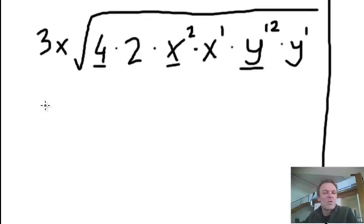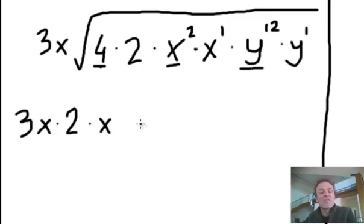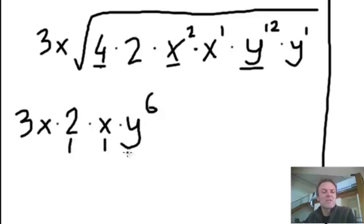Let's keep that 3x out here. If I square root the 4, I get 2. If I square root x², I halve the exponent — I get x (or x¹). If I square root y¹², I halve the exponent and get y⁶. So those bits come out from the perfect-square factors.